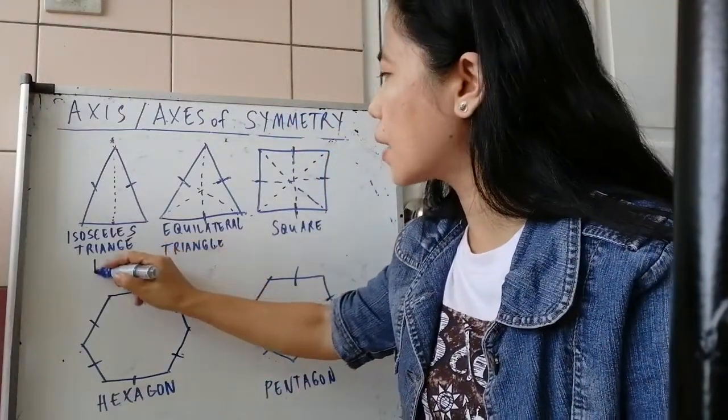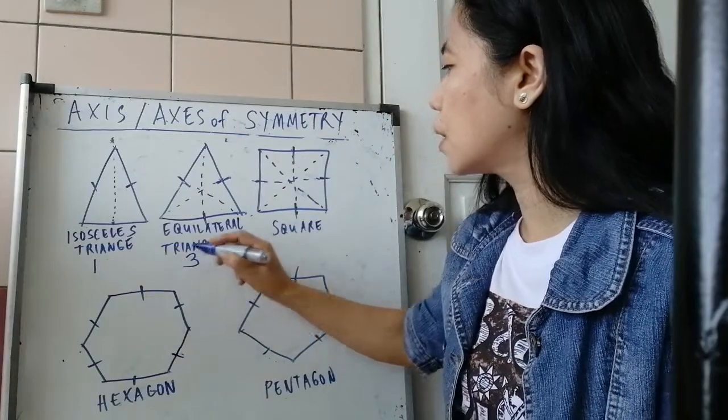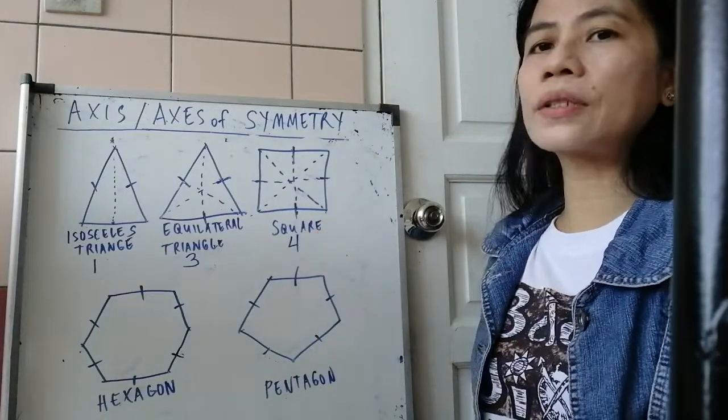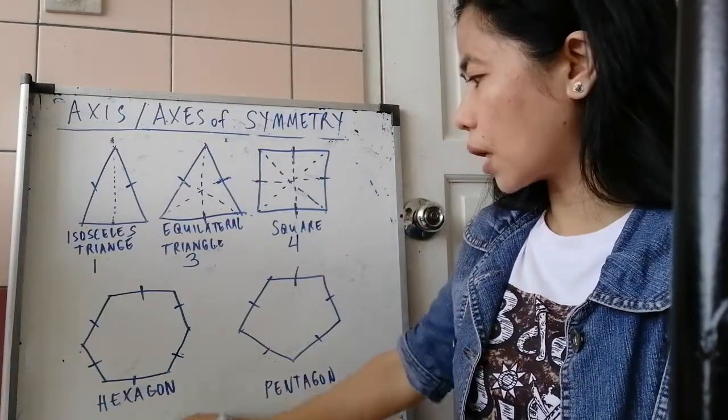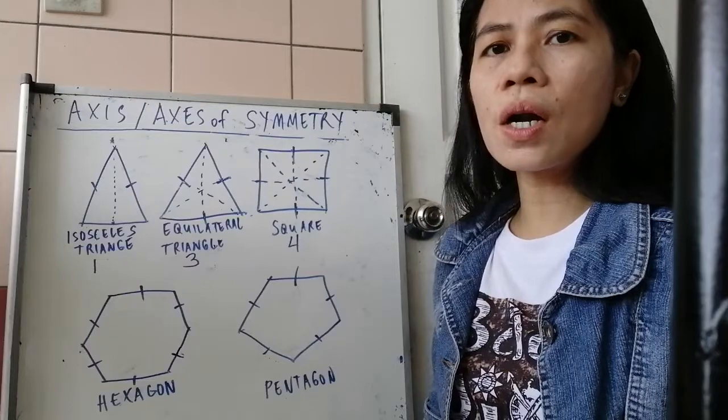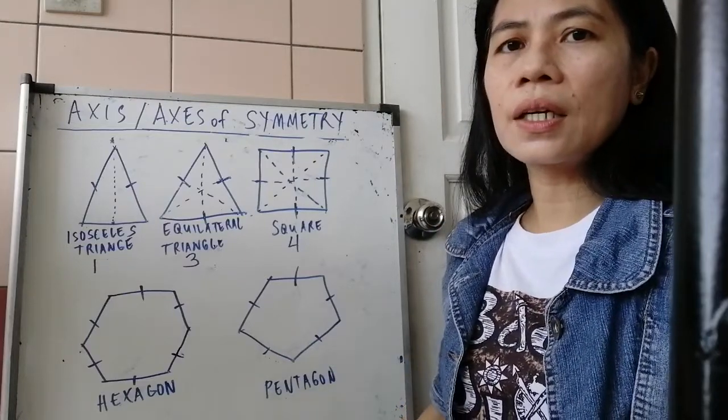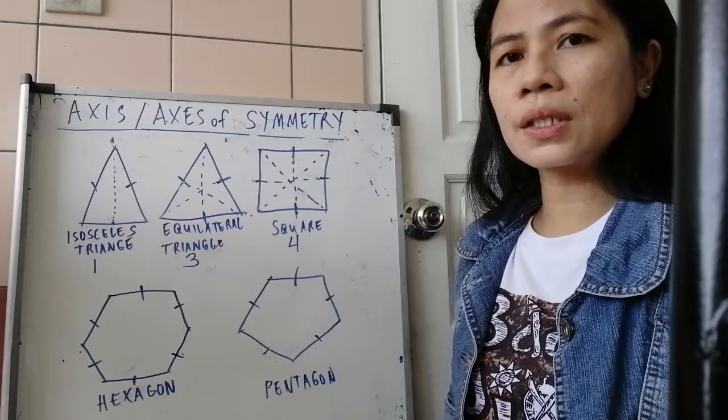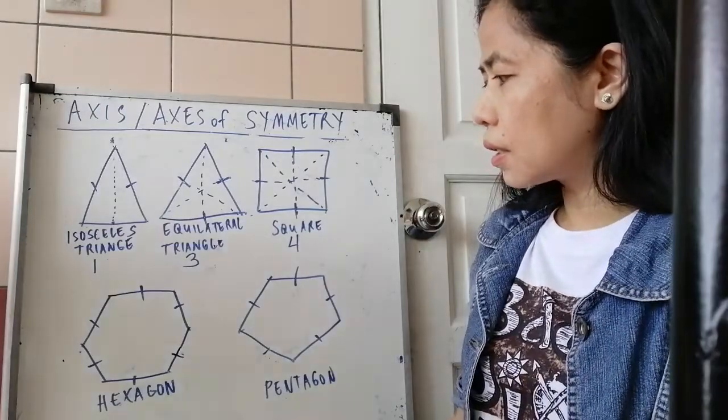So again, we have here one line of symmetry. This one has three lines of symmetry, and then square has four lines of symmetry. Okay, how about for the hexagon? Since it has six equal sides, it will also have six lines of symmetry or six axes of symmetry.